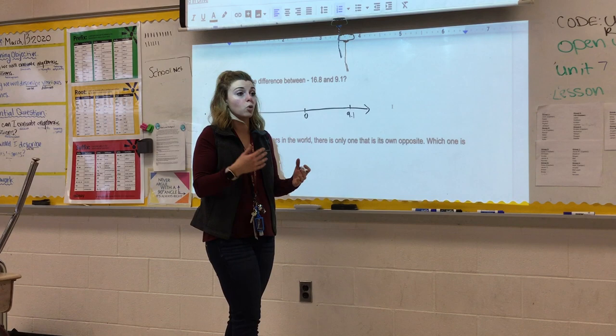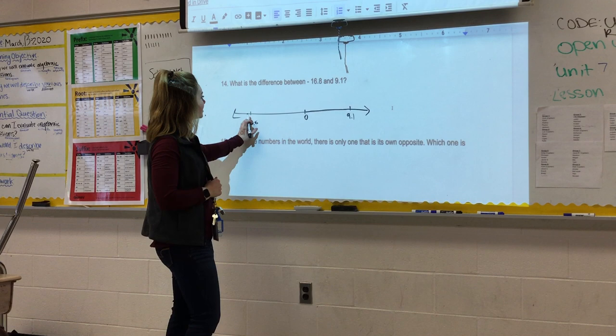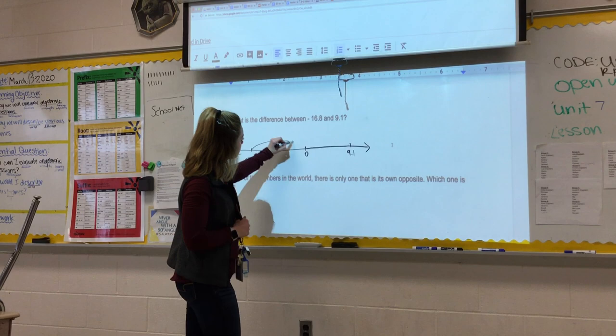So to go from negative 16.8 to zero, I know I'm going to have to jump 16.8 spaces. So I'm already, did I move to the right or the left? I moved to the right, so that's like positive. That's the outcome.